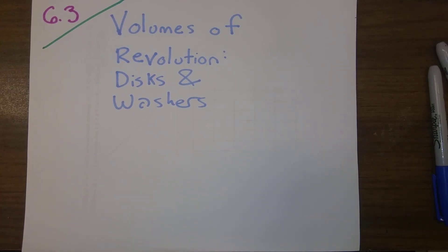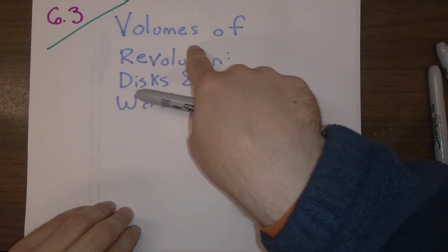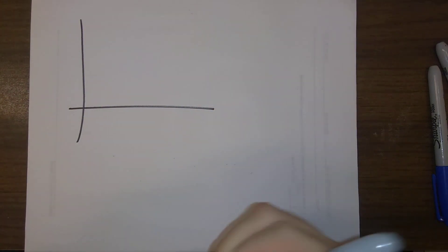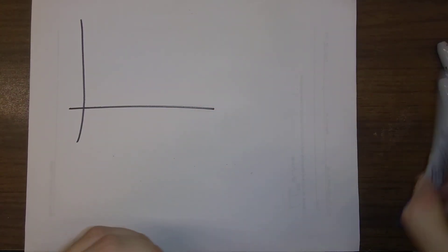Okay, a new section: Section 6.3 on volumes of revolution, discs and washers. So what we're going to do in this section on volumes of revolution is concern ourselves with volumes of regions that look like the following.